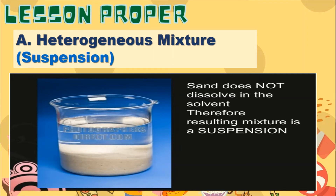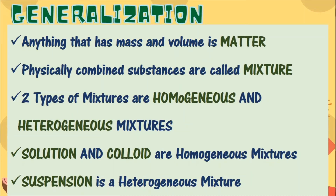As a summary, always remember: anything that has mass and volume is matter. Physically combined substances are called mixtures. The two types of mixtures are homogeneous and heterogeneous. Solution and colloid are homogeneous mixtures, while suspension is a heterogeneous mixture.